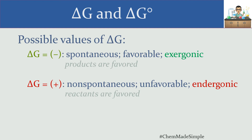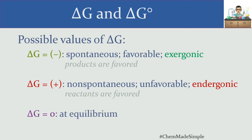If we're not favoring products and not favoring reactants, we're happy where we are — products can form in one direction and reactants can form in the opposite direction to the same degree. When the reaction's forward rate equals its reverse rate — you're forming products just as favorably as reactants — that's an indication the reaction is at equilibrium. When the reaction has reached equilibrium and you're not favoring reactants or products, your delta G value is going to be zero.